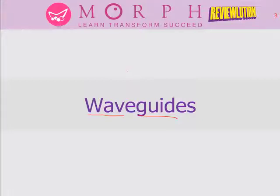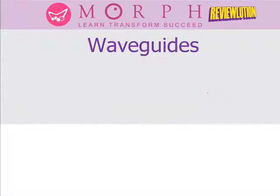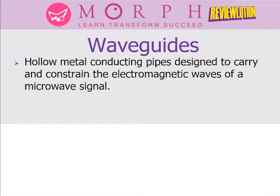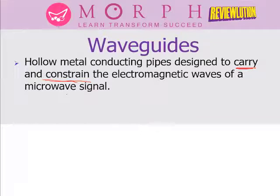We know that our signals will only be radiated in a transmission line because transmission lines are low-pass filters. So high-frequency signals like microwaves will just be radiated. To have a guided transmission medium for the microwave, we use waveguides. A waveguide is a hollow metal conducting pipe designed to carry and constrain microwave signals.